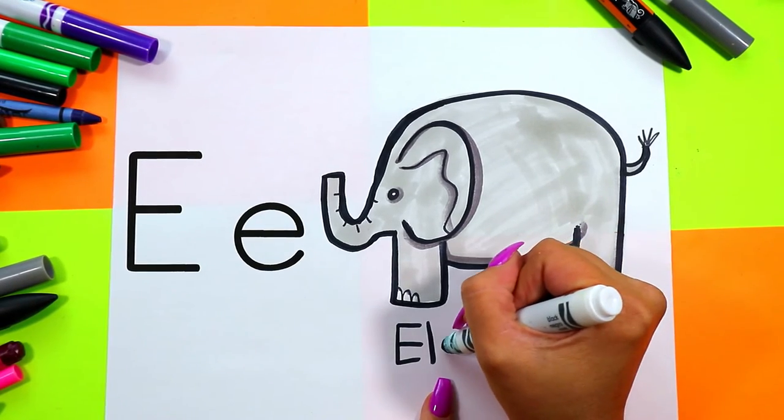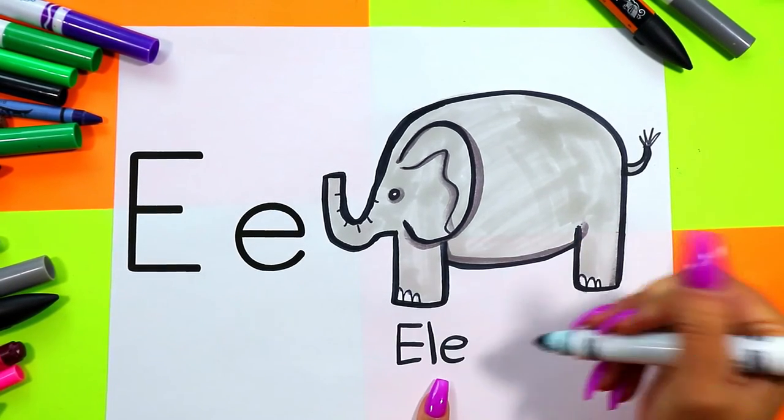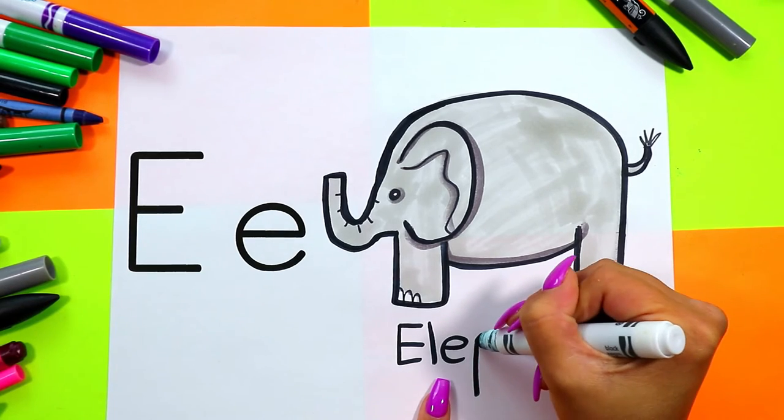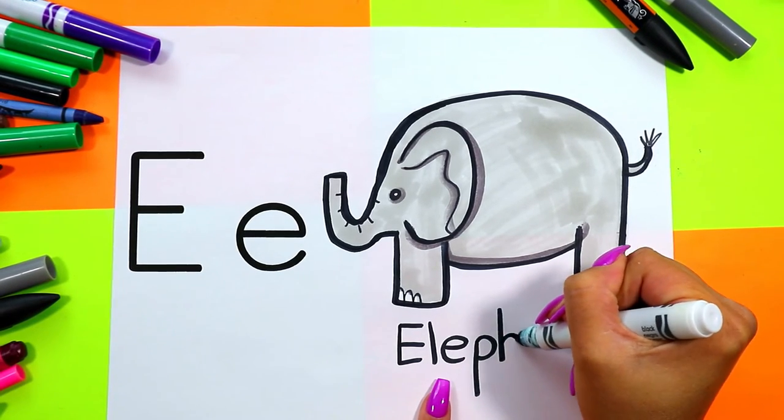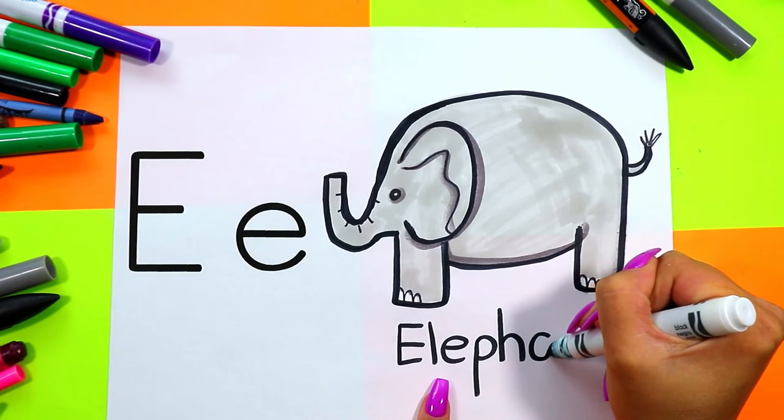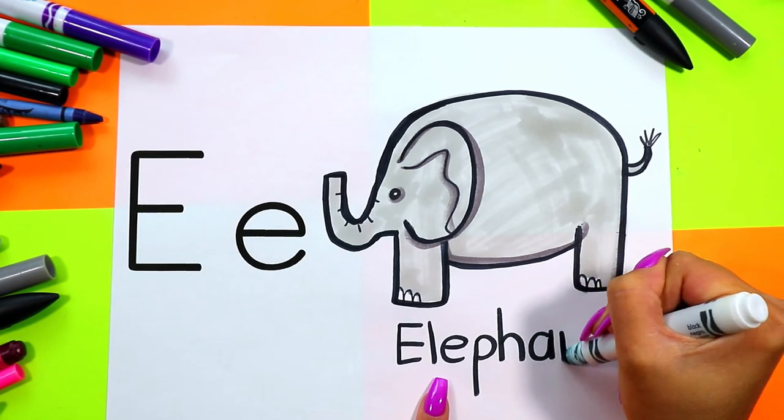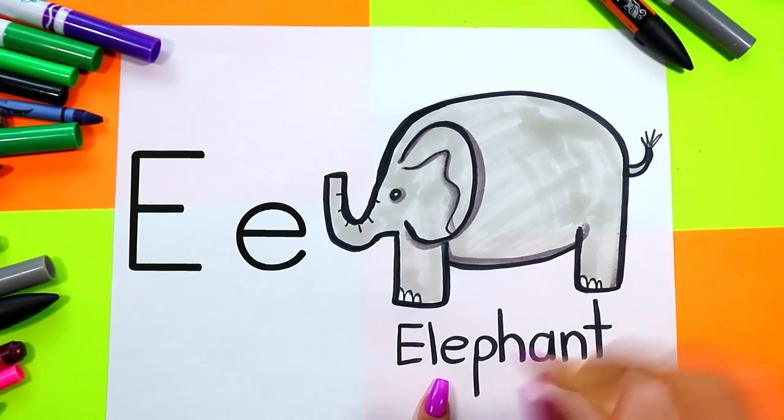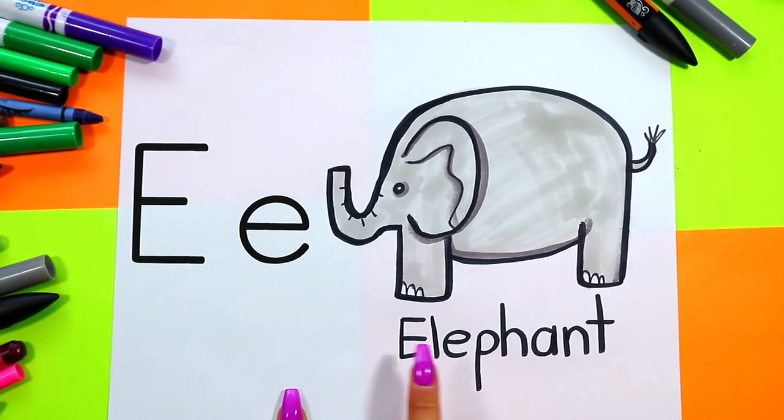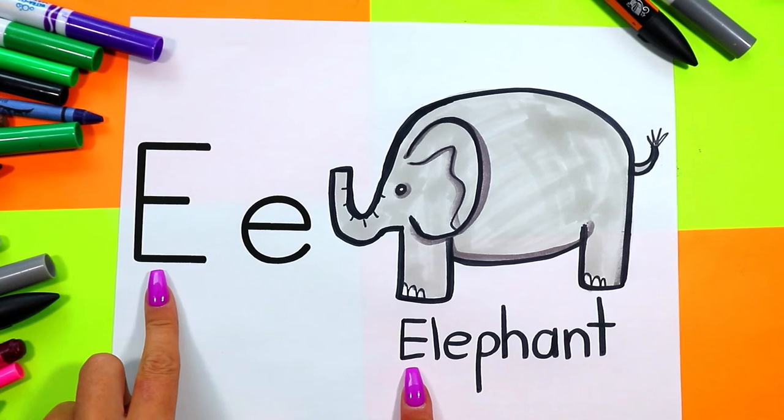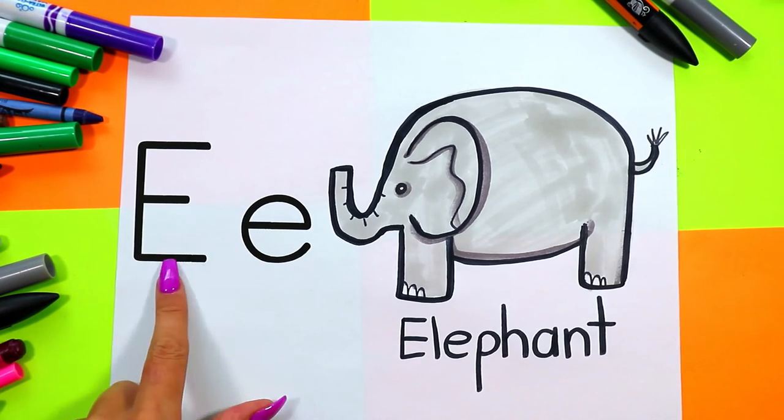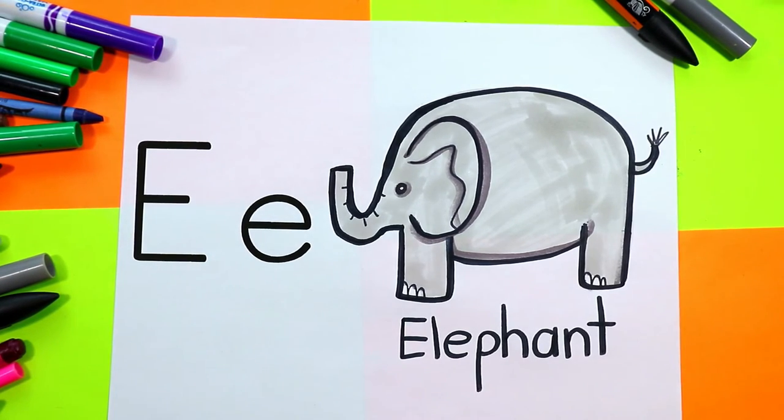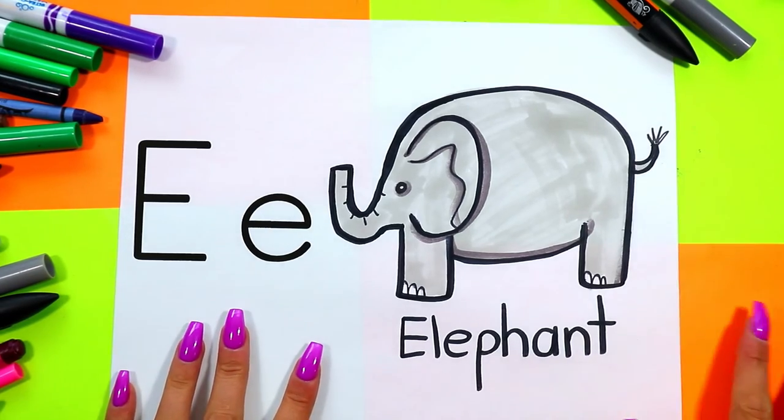E-L-E-P-H-A-N-T spells the word elephant. Elephant begins with the letter E. Elephant starts with the letter E.